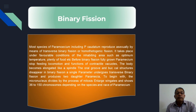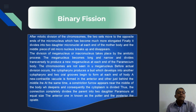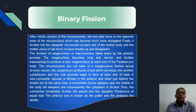A transverse constriction develops across the animal body. Two cytopharynges bud off along both sides of the Paramecium internally. The micronucleus divides by the process of mitosis, enlarges, and shows at least 150 chromosomes depending on the species or race of Paramecium. After mitotic division, the two sets of chromosomes move to opposite ends of the much-elongated micronucleus, and it finally divides into two daughter micronuclei at each end of the mother body, with the middle piece disappearing.